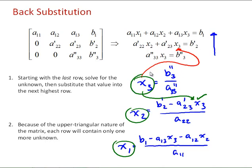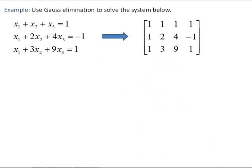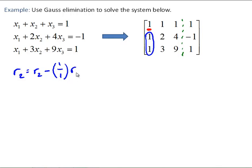So let's look at doing this with numbers and go through the process one more time. We're going to use Gauss elimination to solve the system below, which I've already written as an augmented matrix with the right-hand side vector added as a fourth column. We start under the first element on the diagonal — the pivot element — and eliminate the two elements in the column under it. Row 2 becomes row 2 minus (1/1) times row 1, and we write the resulting matrix.